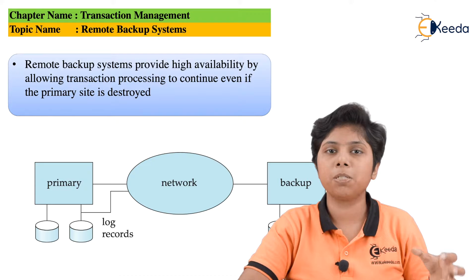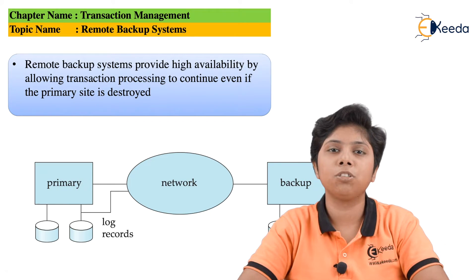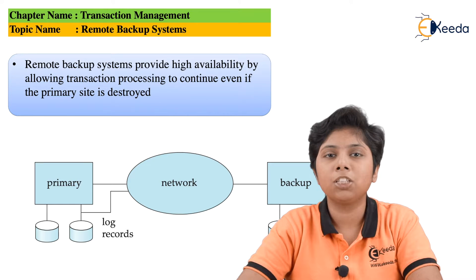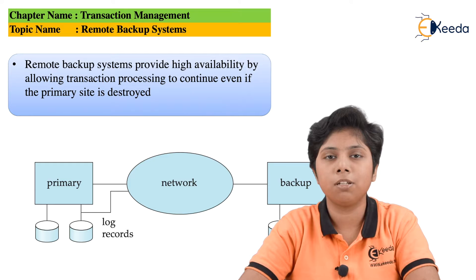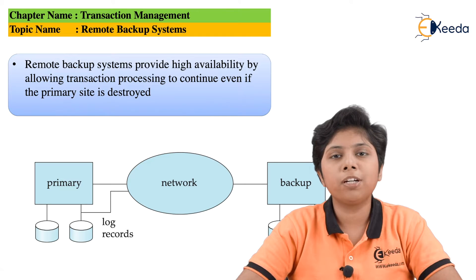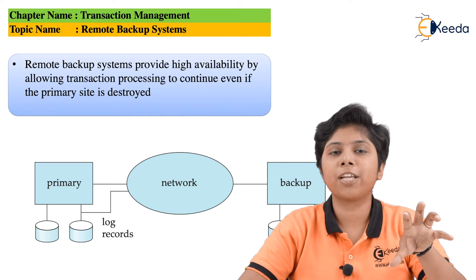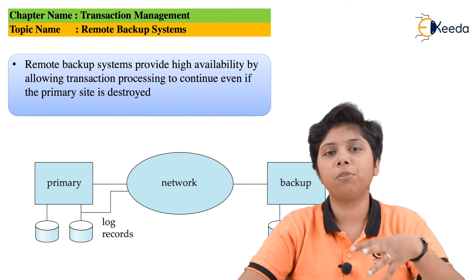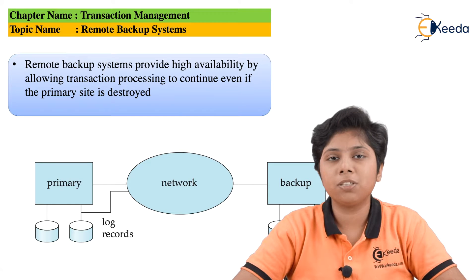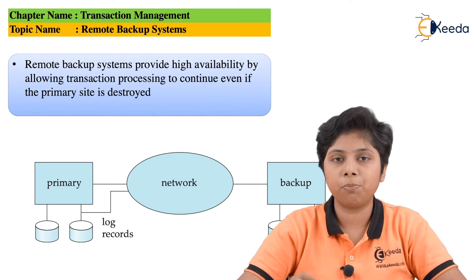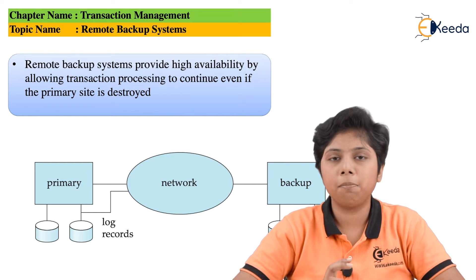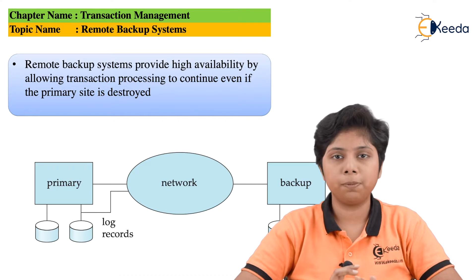If we only store a static database snapshot from one update to the next and send it to the backup, the remote site will not reflect transactional updates. As transactions are performed at the primary site and transferred to the remote site, if the primary site fails, the remote site becomes the active site and can continue performing transactions. Availability is greatly increased because physical or logical damage to the primary site will not affect the remote site.